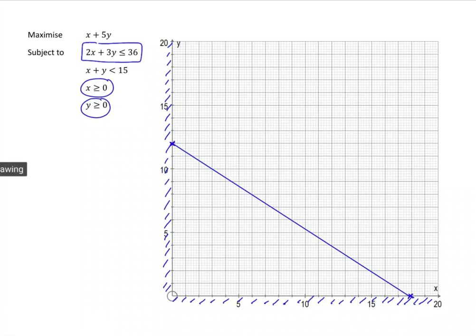Now, how about which region do we want? Well, you might think that's obvious, but if you're not sure, check a point that is either side of the line, not on the line. So, let's try 0, 0, for example. We would have 2 lots of 0 plus 3 lots of 0. Is that less than or equal to 36? And the answer to that would be yes. So, that means we want the region with 0, 0. So, we'll shade the region we don't want.